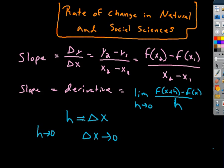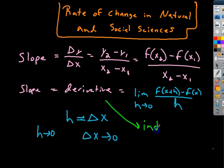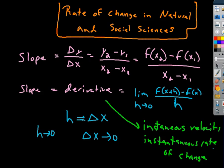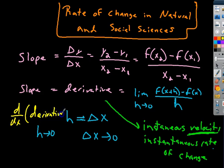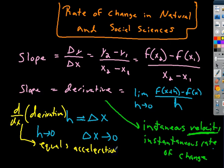Also remember: the derivative equals the limit as h approaches 0 of that expression — that's the definition of the derivative — which is also equal to the instantaneous velocity or the instantaneous rate of change. We should also mention the second derivative, which is the derivative of the derivative. We call it double prime — y double prime — and that equals acceleration.